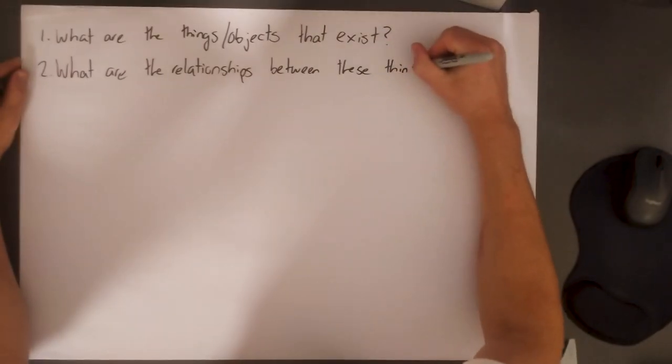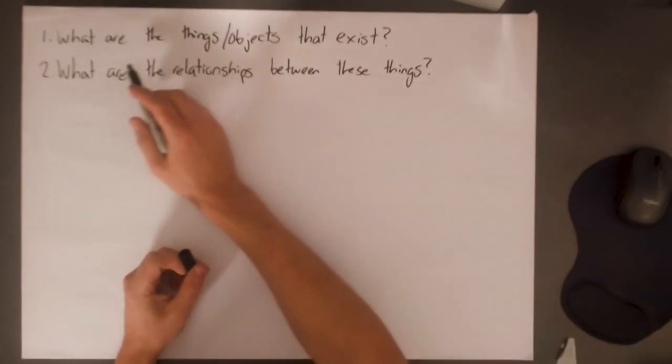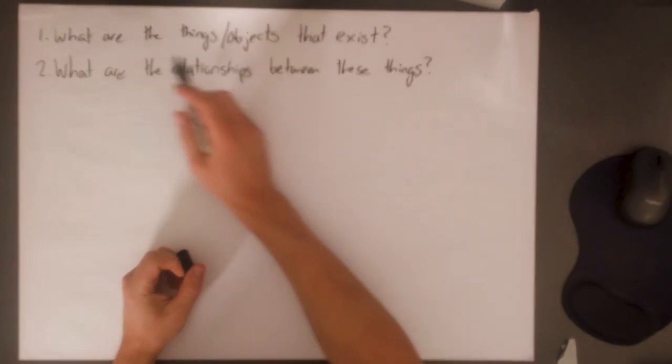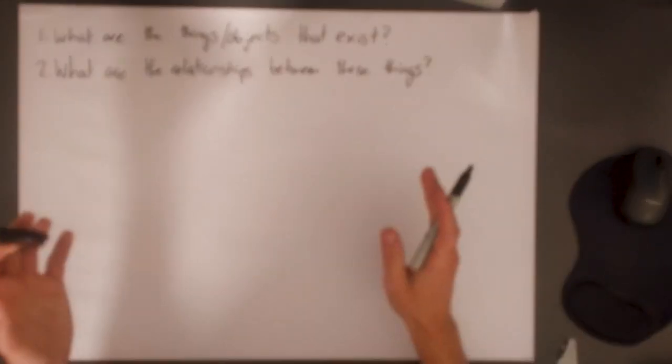The things we're going to define in our database don't exist in a vacuum. In the case of Amazon, you have a user and they're going to interact with TVs, basketballs, credit cards. So things don't exist in a vacuum. Let's focus on this first question: what are the things or objects that exist?